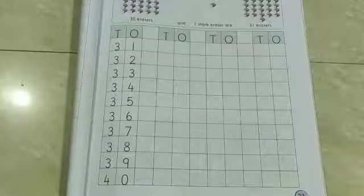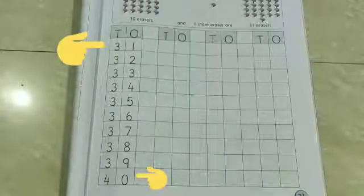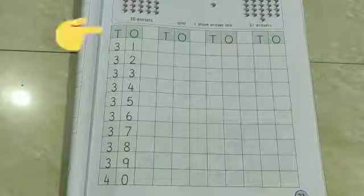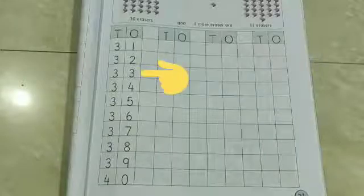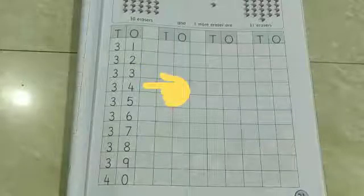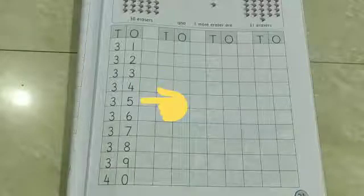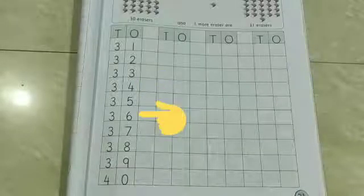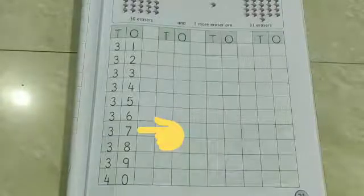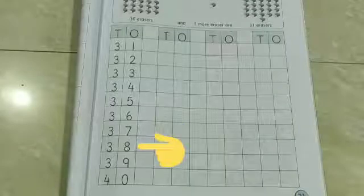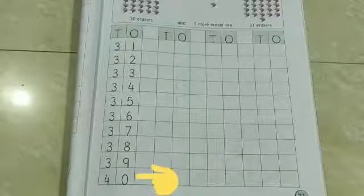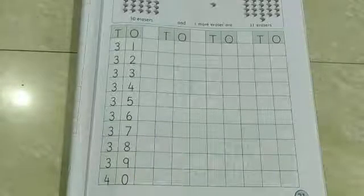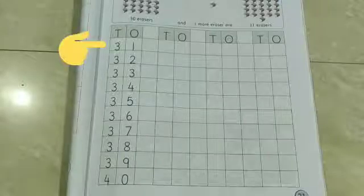Now, let's read forward counting from 31 to 40. Children, as you know, T means tens and O means ones. 31, 32, 33, 34, 35, 36, 37, 38, 39, 40. So children, now in the given place, we will write numbers from 31 to 40. Let's start.